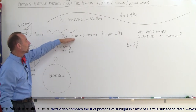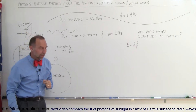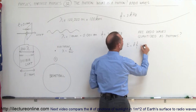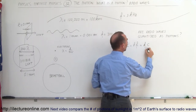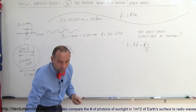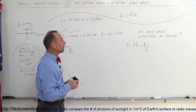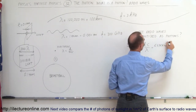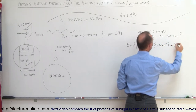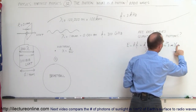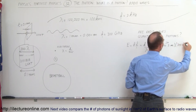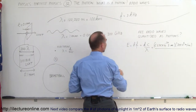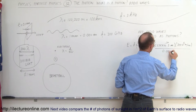Let's try two different sizes: one at one millimeter and one at 100,000 meters. The energy contained within a photon is Planck's constant times the frequency, which equals Planck's constant times the speed of light divided by the wavelength — E = hf = hc/λ. That equals 6.626 × 10⁻³⁴ joules·seconds times 3 × 10⁸ meters per second, divided by the wavelength. Starting with one millimeter, that's 0.001 meter.